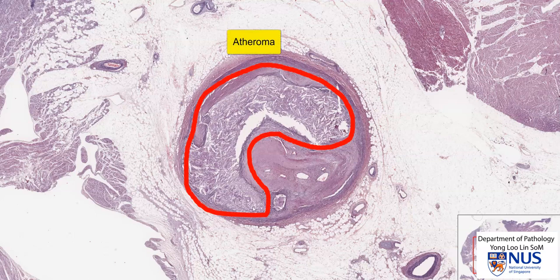The atheroma is occupying probably around 75 to 80 percent of the internal diameter of the artery, causing some narrowing. Superimposed on that, there has been formation of a thrombus, and here we have an organizing thrombus.